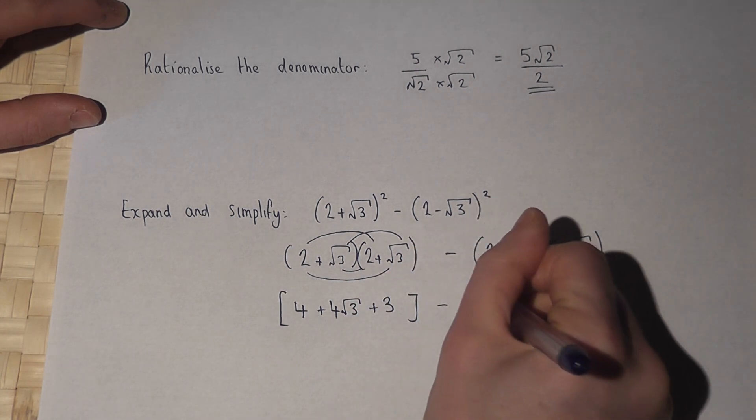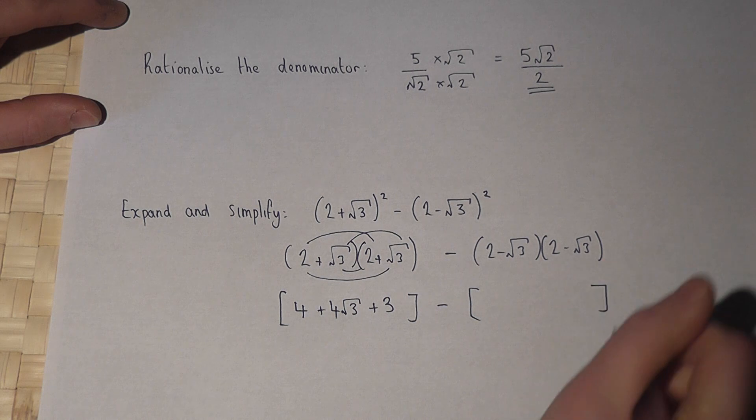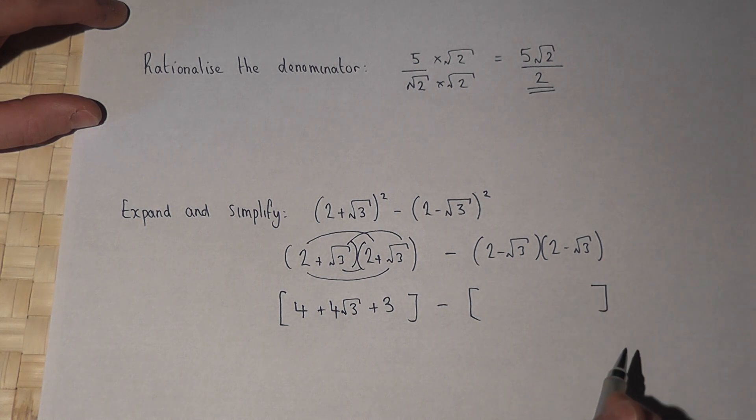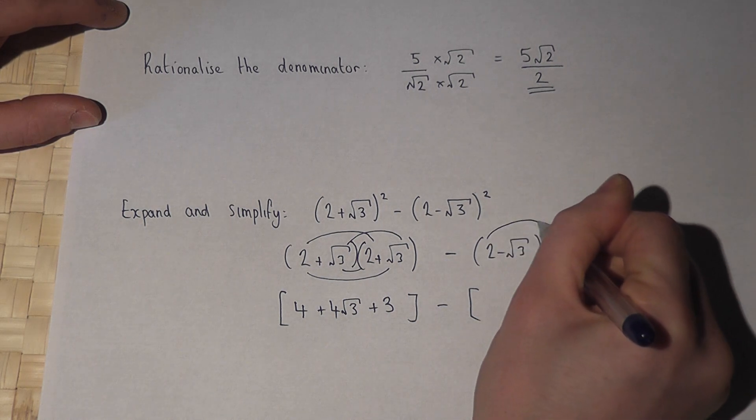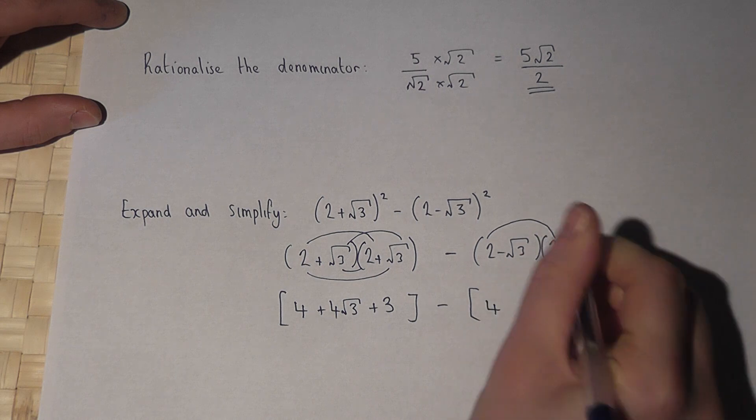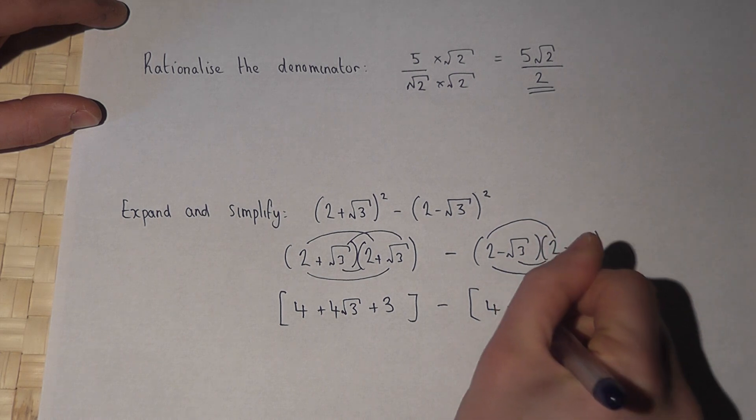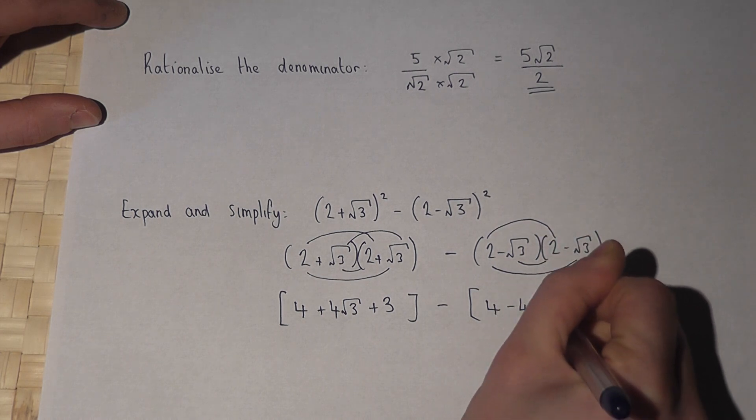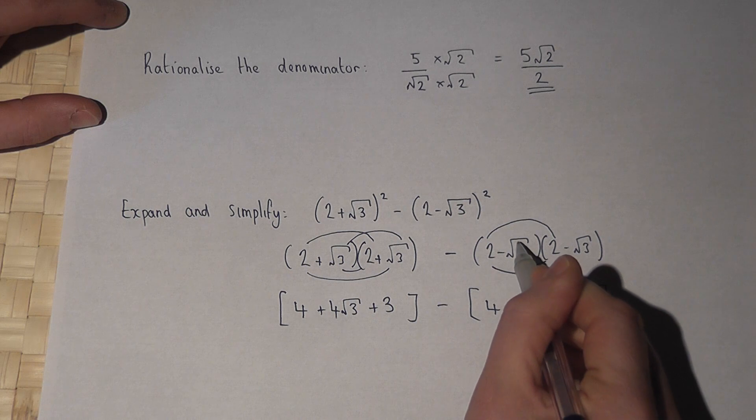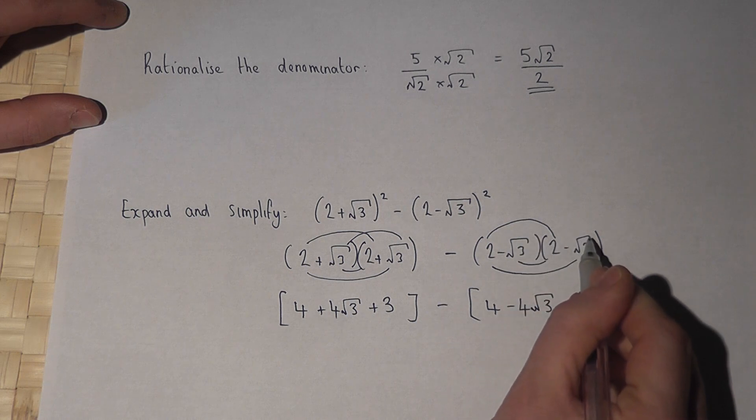Now if we then expand the second pair of brackets, we get a similar type of thing. 2 times 2 is 4. But now we get a minus 2 root 3 and another minus 2 root 3, which is minus 4 lots of root 3. And then root 3 times root 3 is root of 9, which is 3.